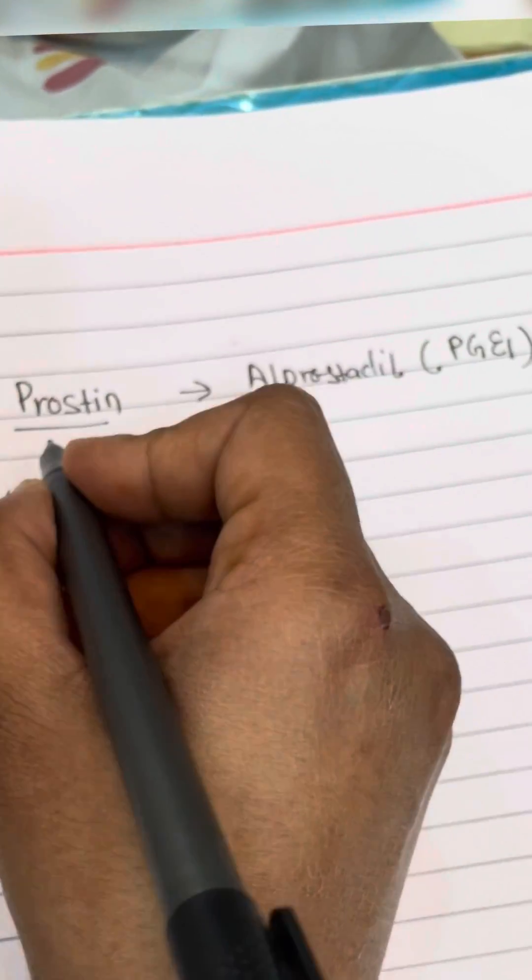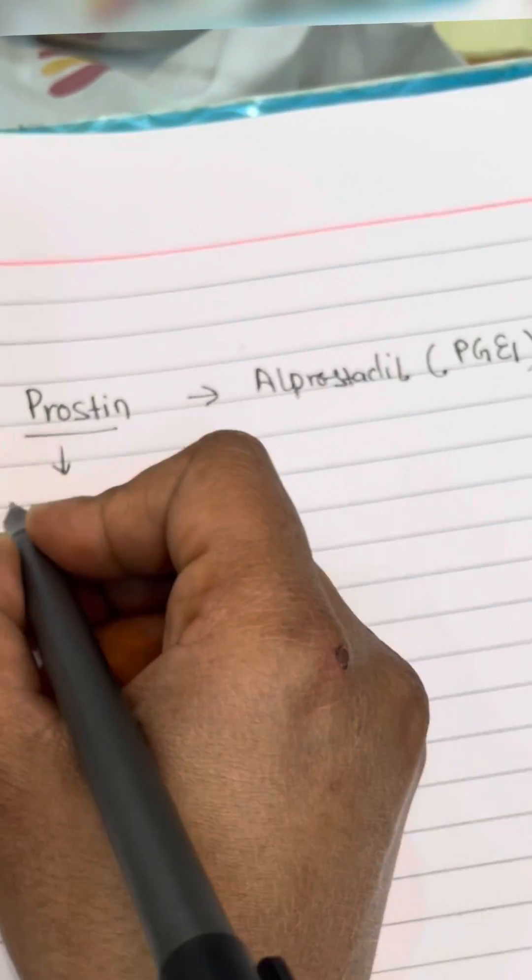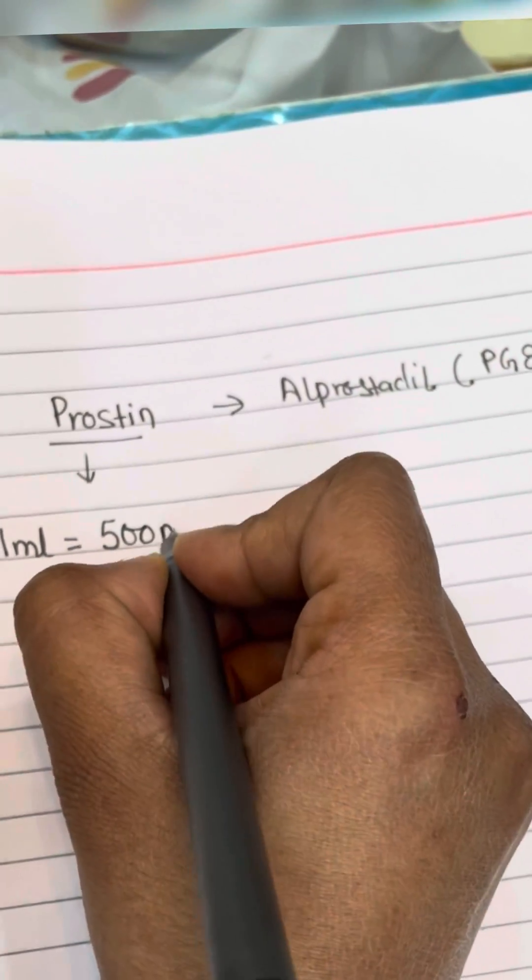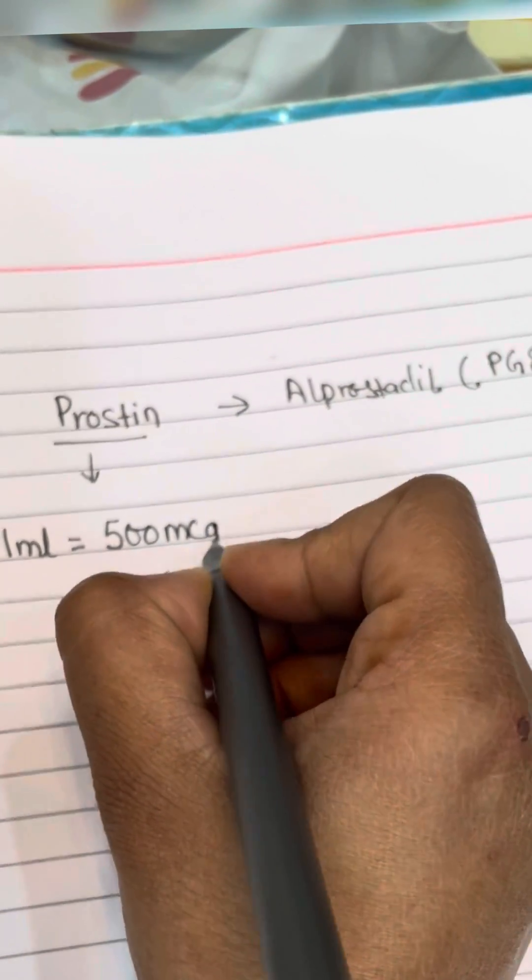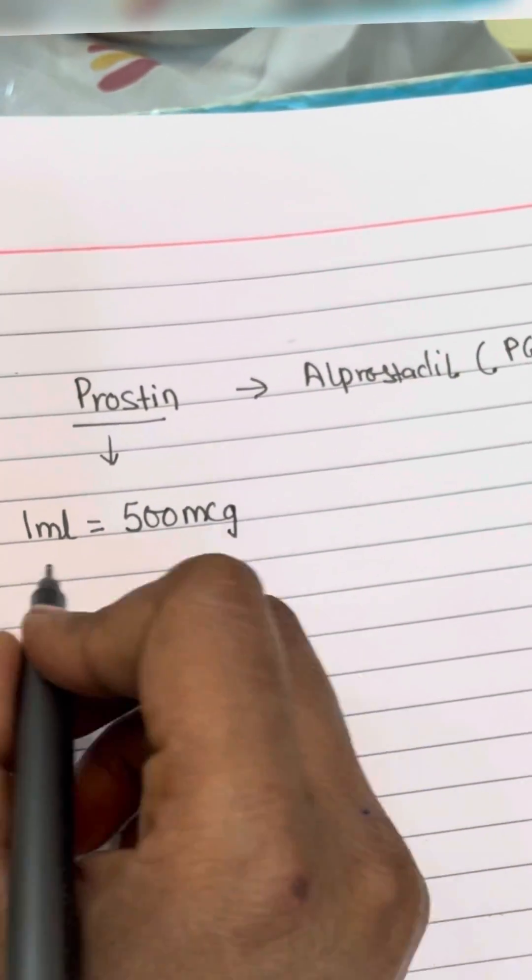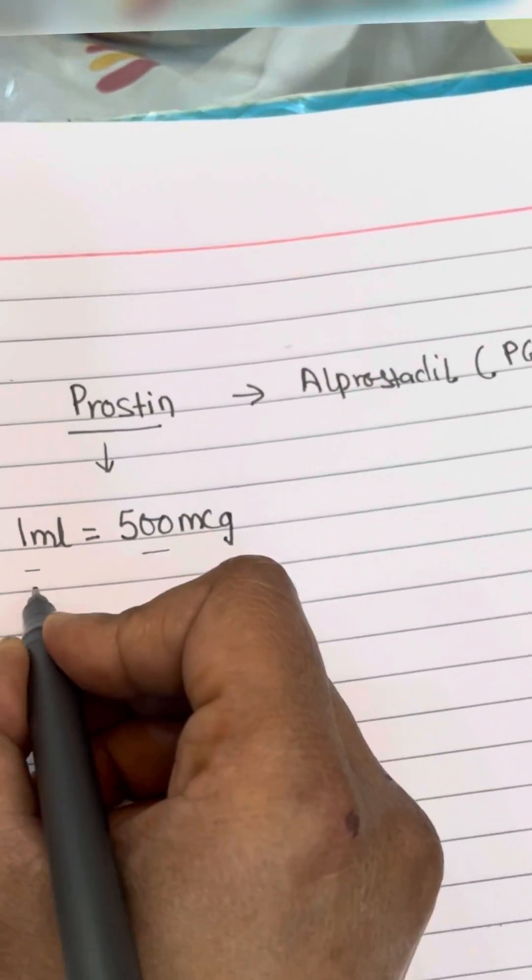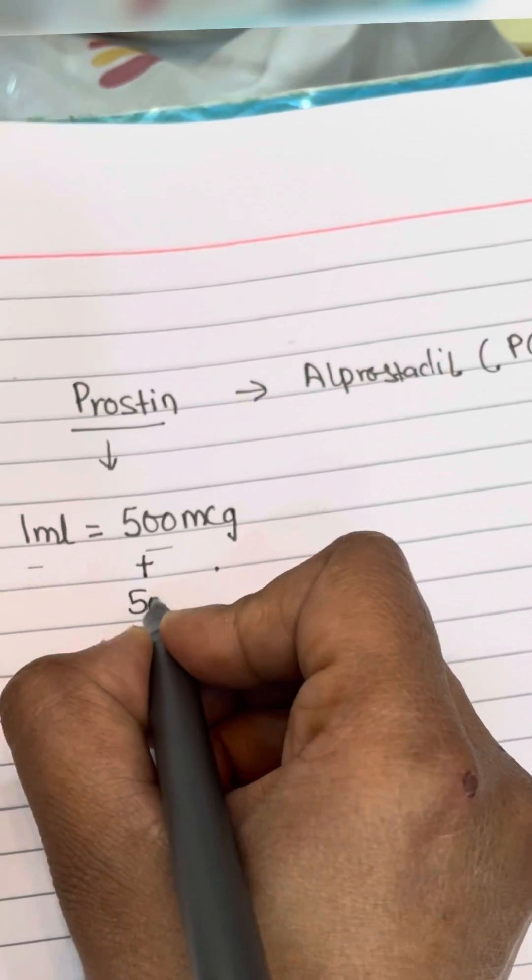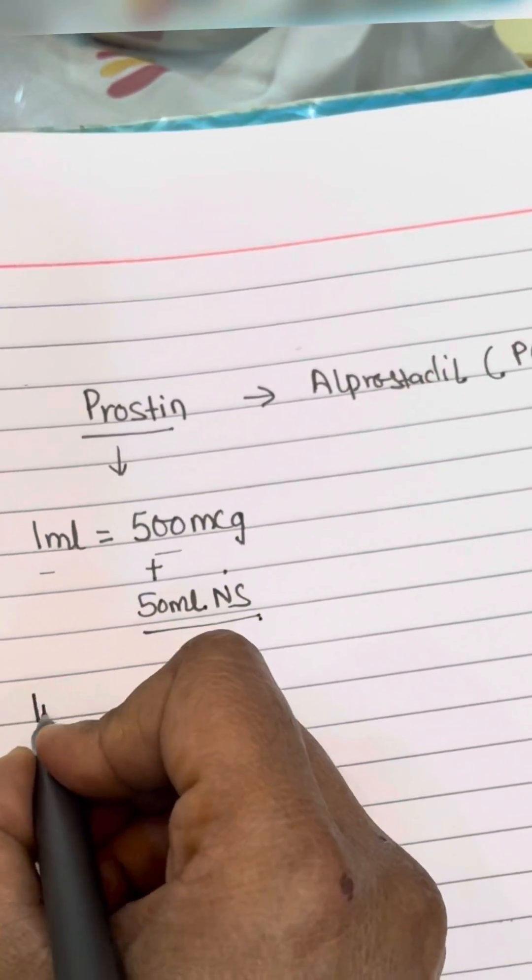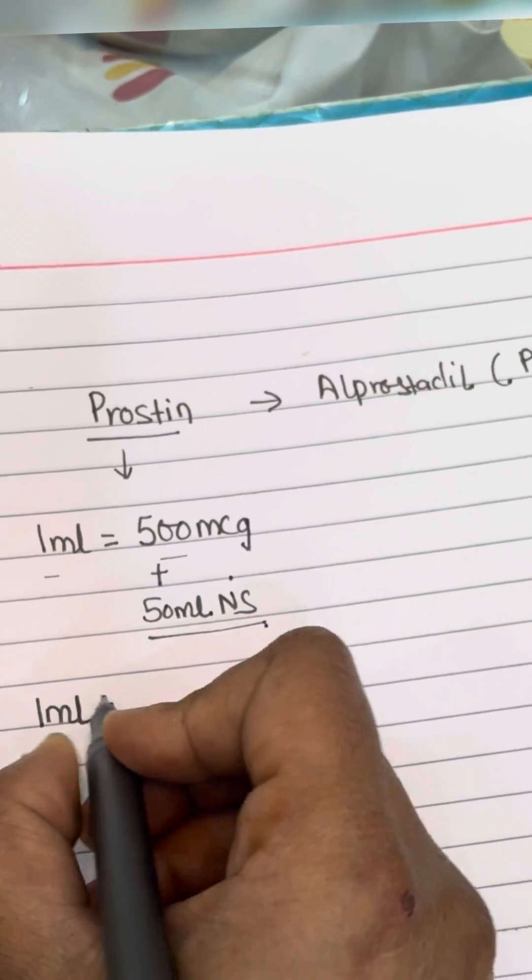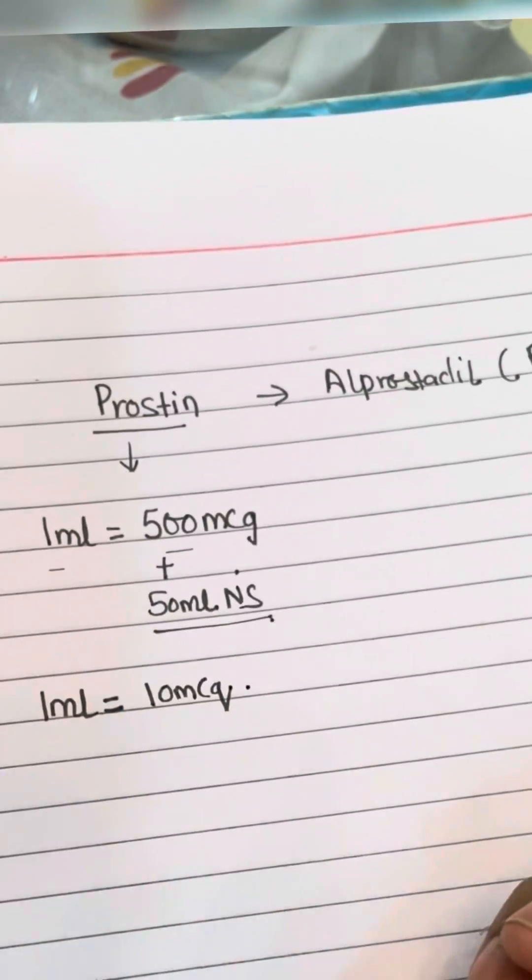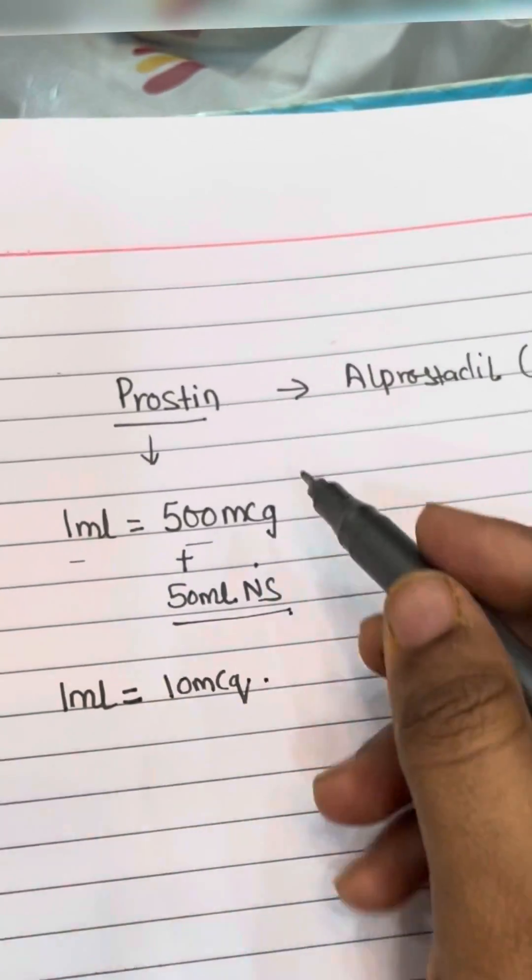The regular ampoule of prostin comes as 1ml containing 500 micrograms. The usual dilution that we do is add 50ml normal saline to it, so that 1ml becomes 10 micrograms. So after adding this dilution, 1ml equals 10 micrograms.